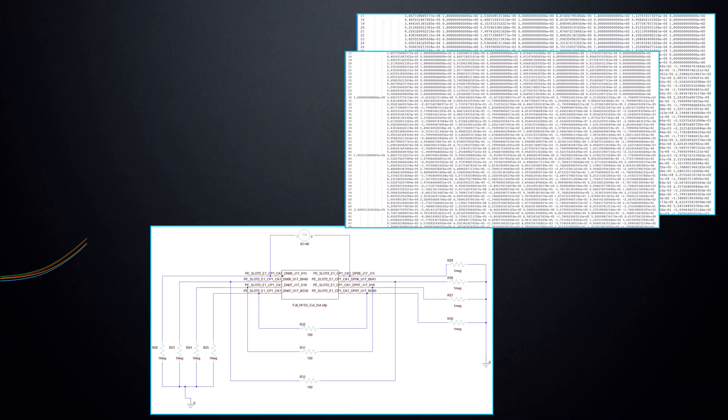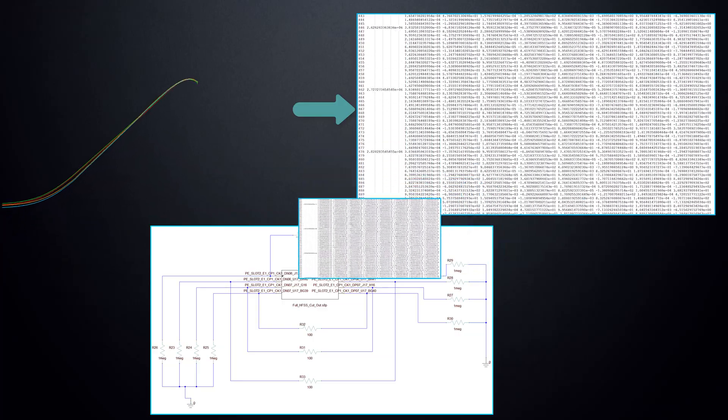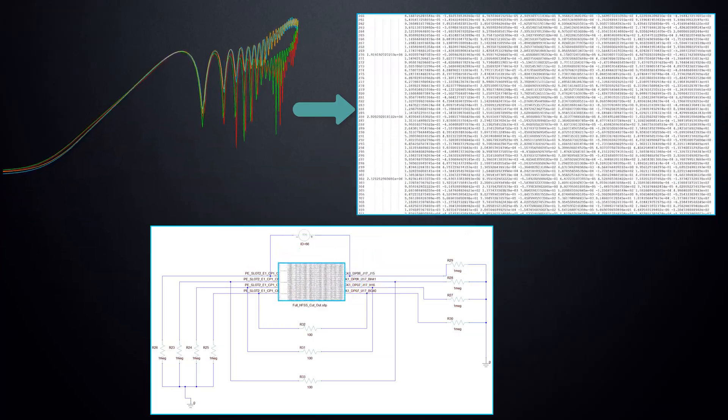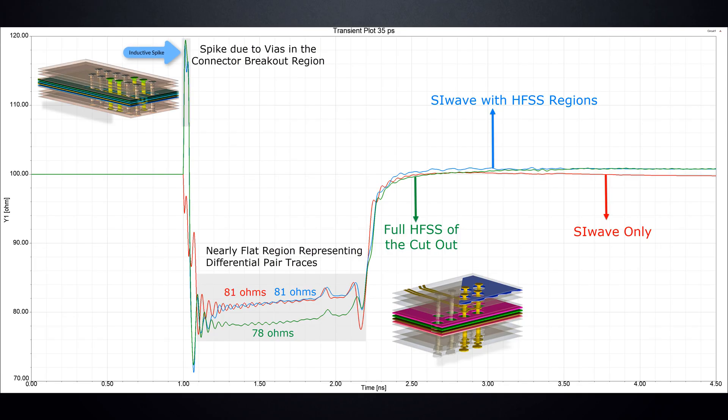State space models generated from the S-parameter results can be used in time domain circuit simulations to evaluate channel impedance. The 3D discontinuities are captured more accurately in SI-Wave with HFSS Regions, as shown by this inductive spike due to the vias in the connector region. This gives a more accurate prediction of channel performance.